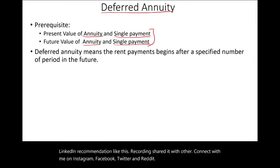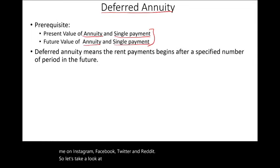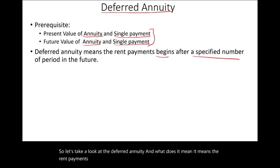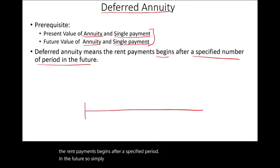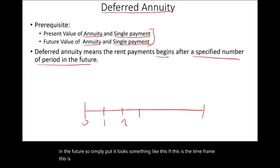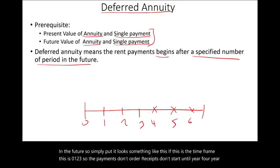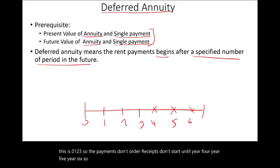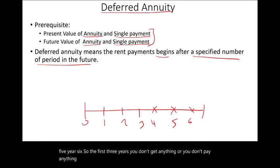So let's take a look at the deferred annuity and what it means. It means that the rent payments begin after a specified period in the future. Simply put, if this is the time frame — 0, 1, 2, 3 — the payments or receipts don't start until year 4, year 5, year 6. So the first three years you don't get anything or pay anything. This is what a deferred annuity is.